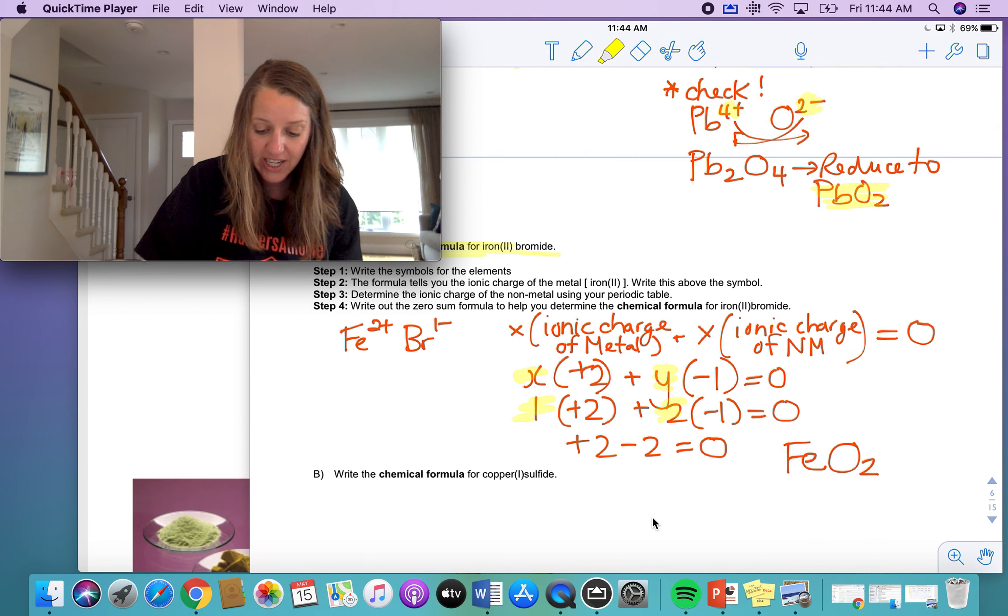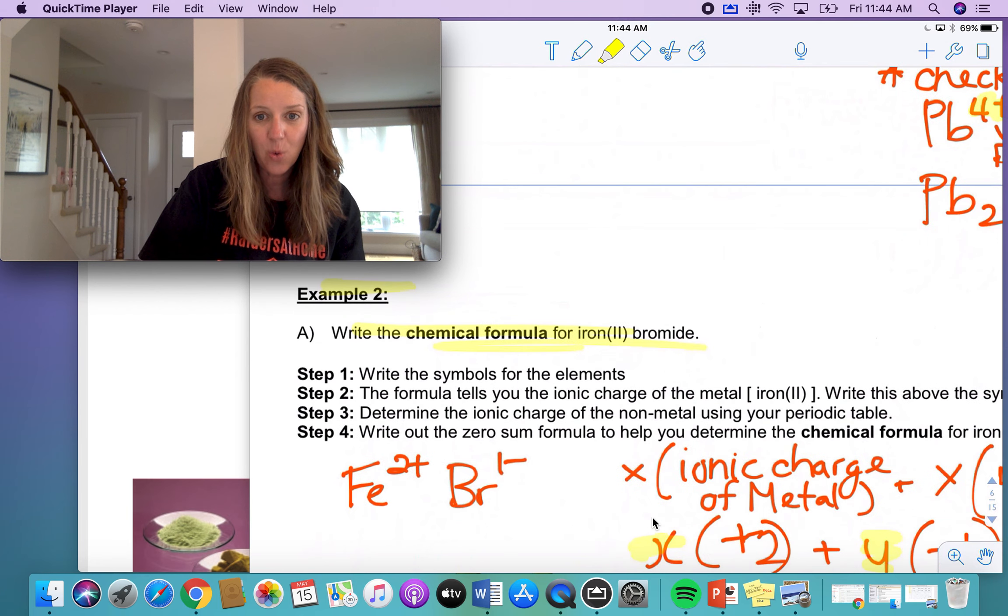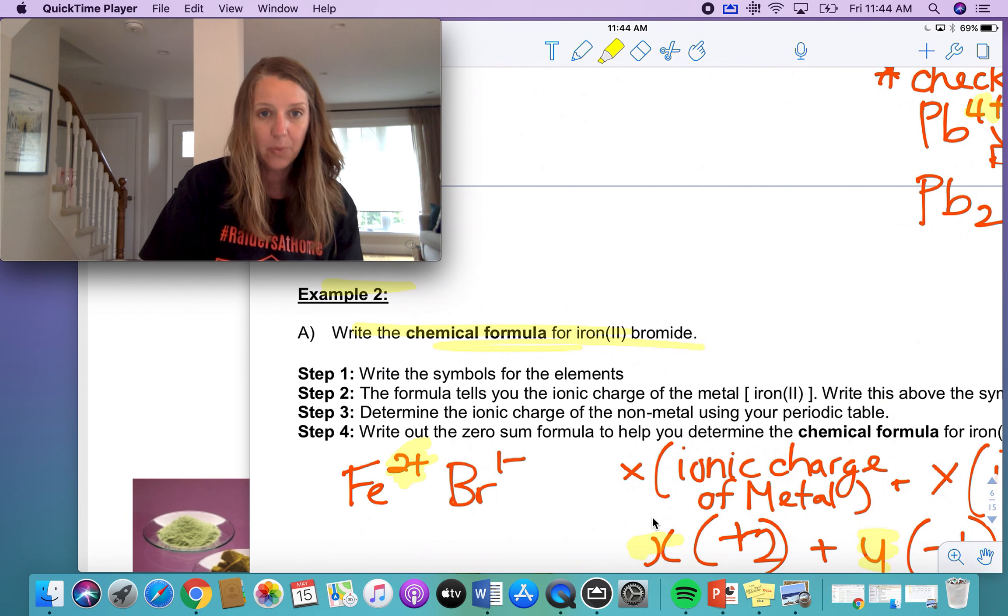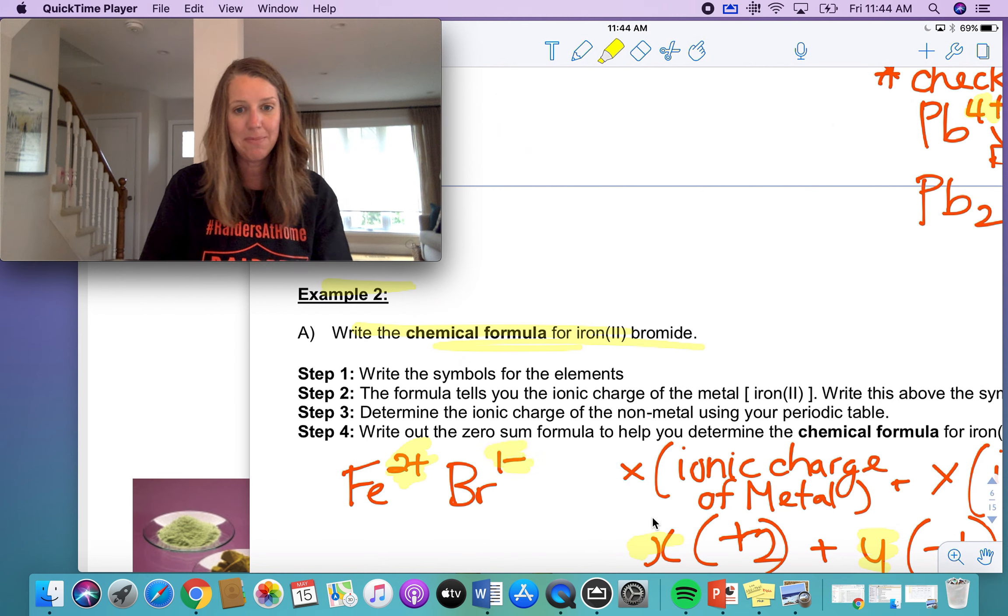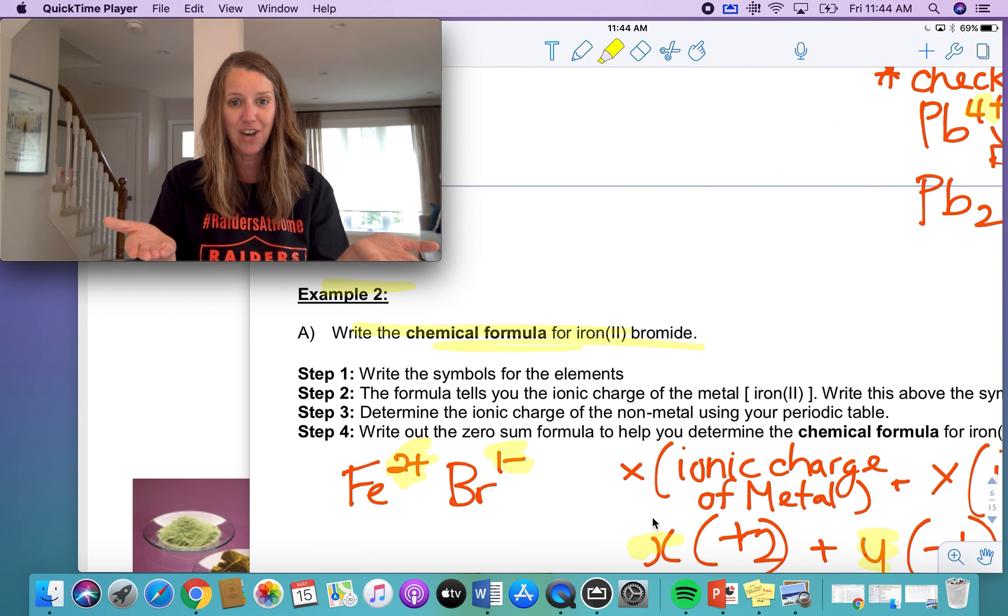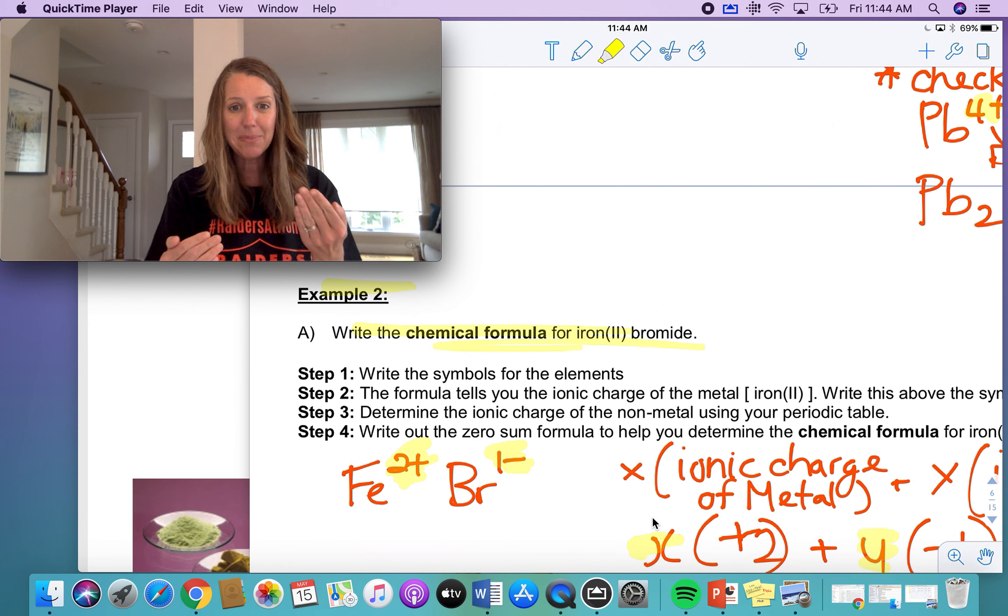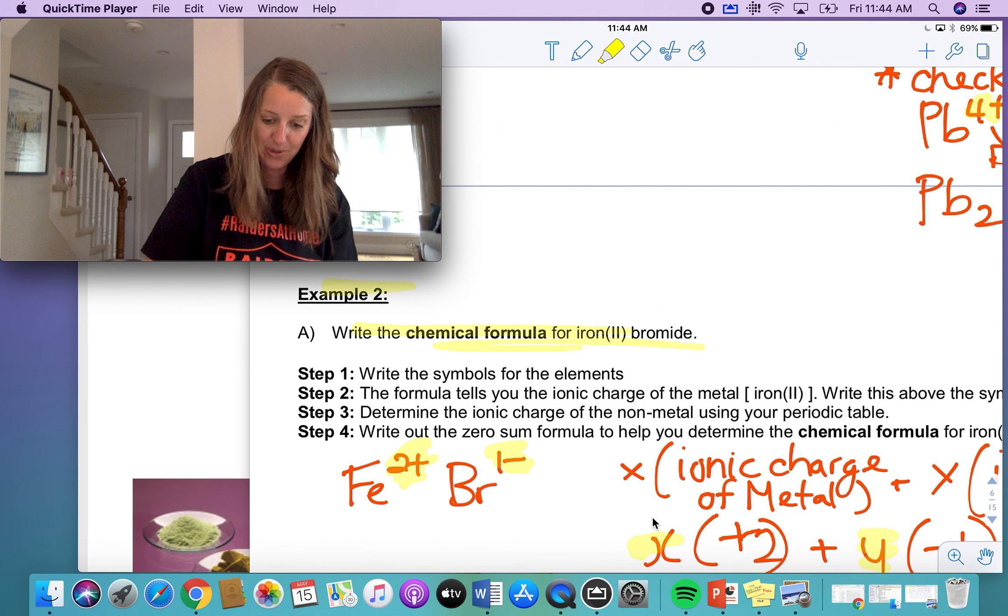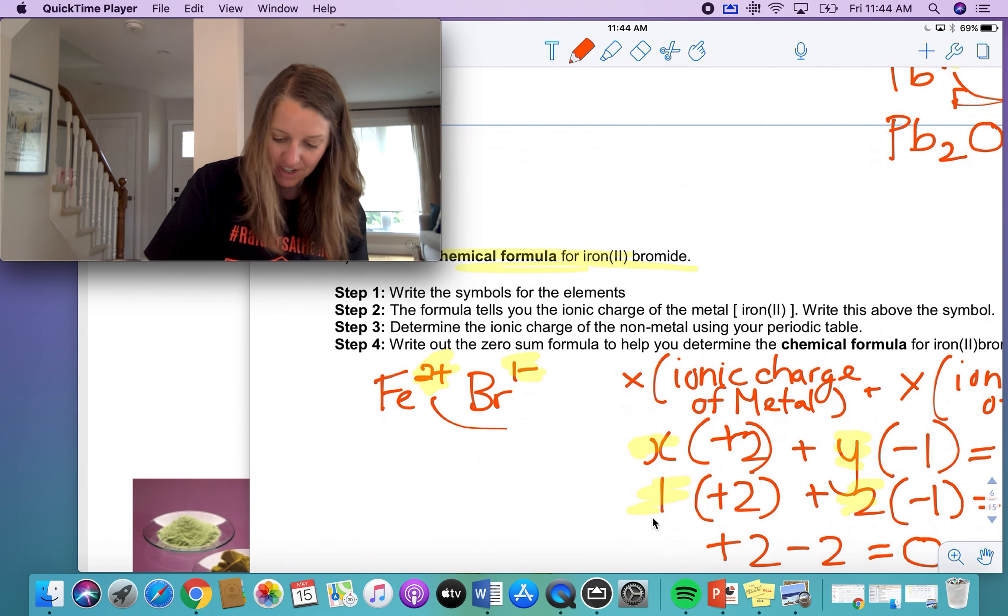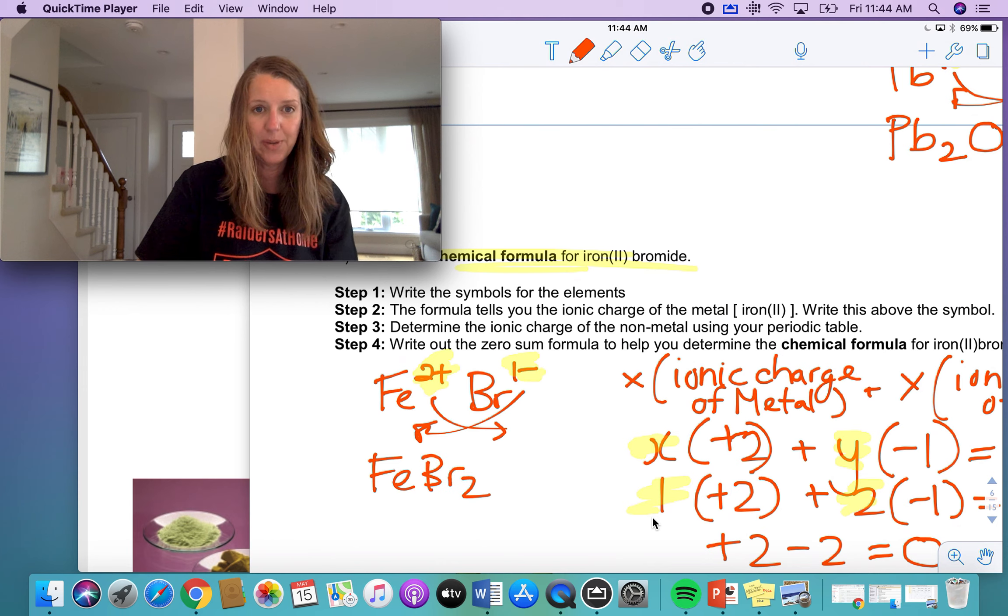I already know, because it told me in the question that it's iron two, therefore, it's the iron with the two plus charge that's in that compound. Bromine is a one minus charge. Can you do this math in your head? What's the formula going to be? Crisscross rule if you want. Sure, that's the quick way to do it, right? Yeah, go for it. I know that they're going to come together in a ratio of one iron and two bromine.